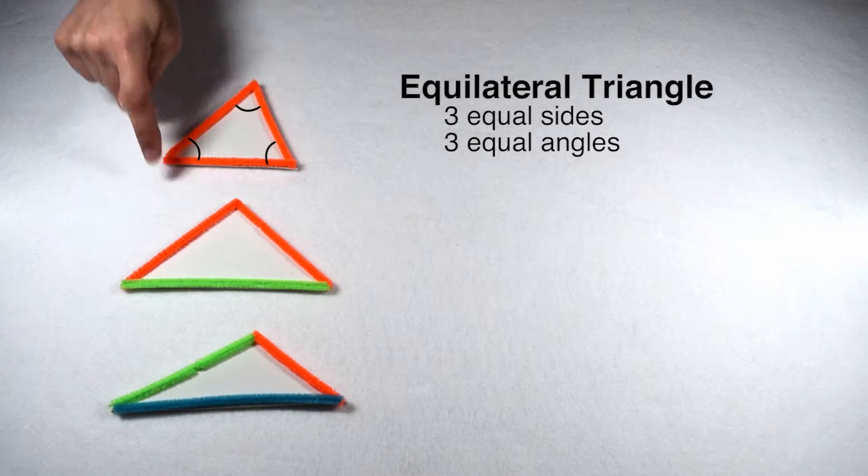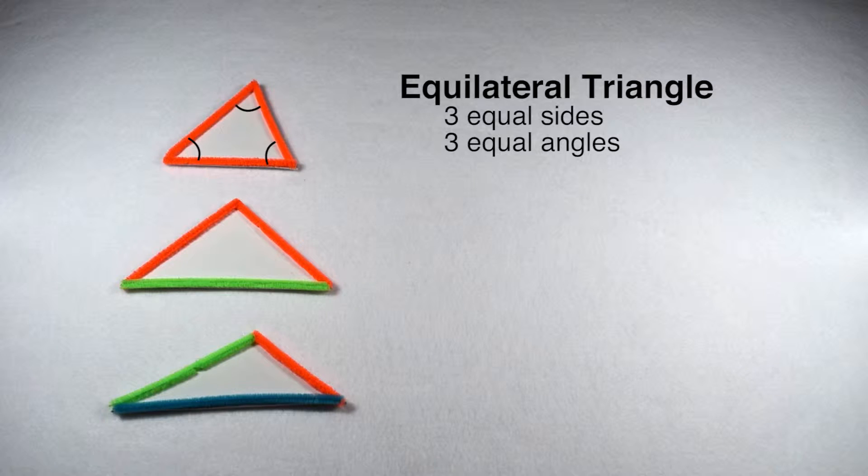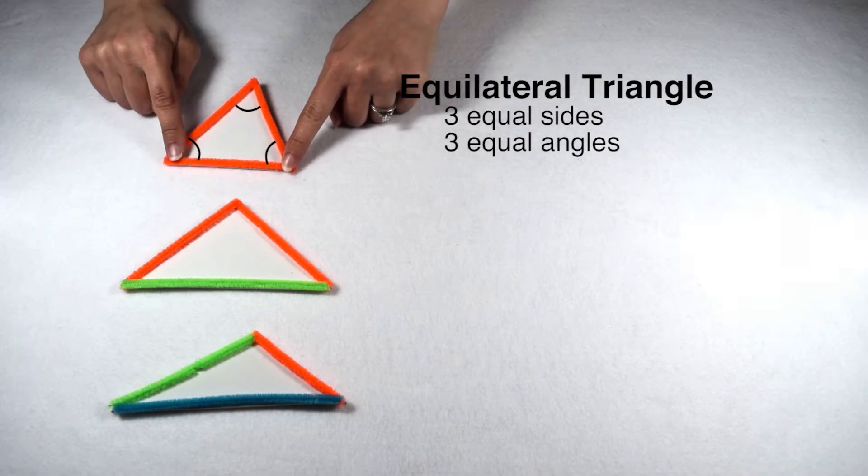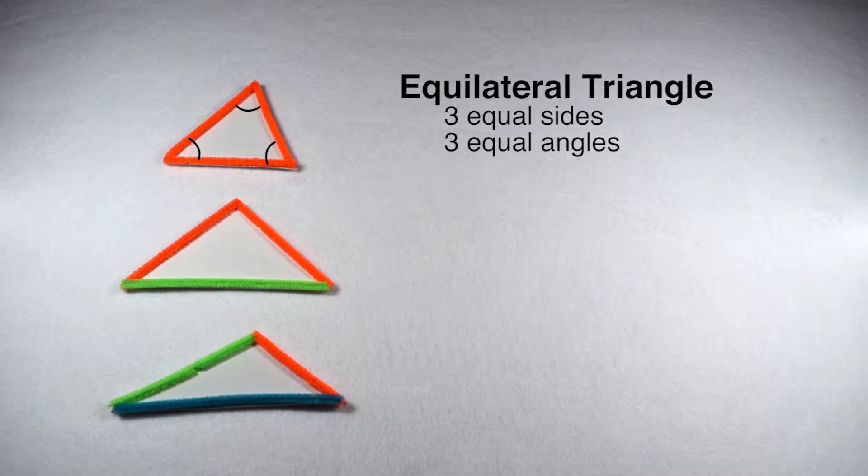If a triangle has three equal sides, then it can be described as an equilateral triangle. In addition to having three equal sides, equilateral triangles also have three equal angles. This means our equilateral triangle is also our regular triangle since its side lengths and angle measures are all congruent.